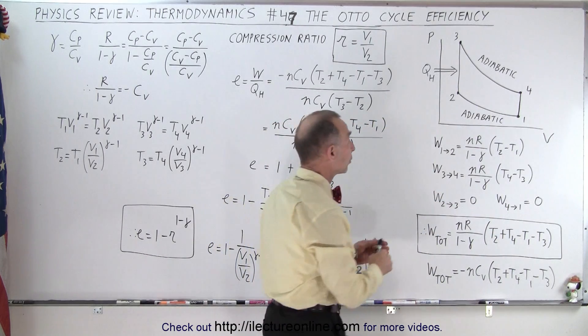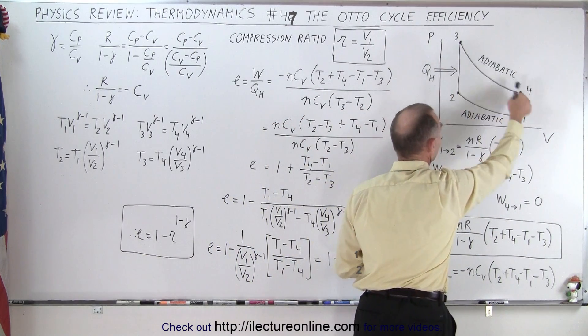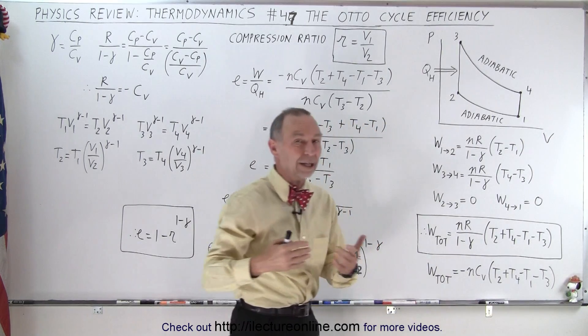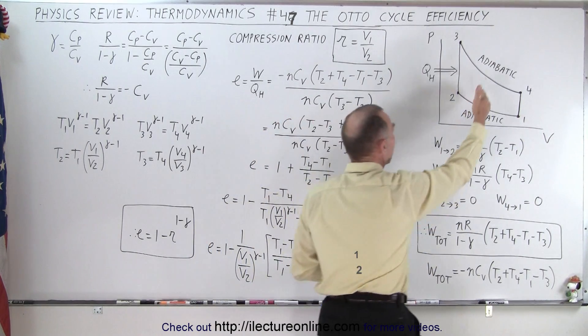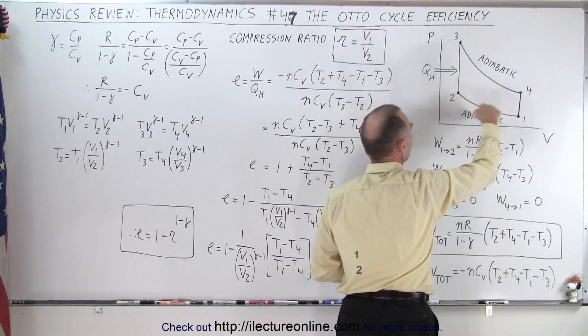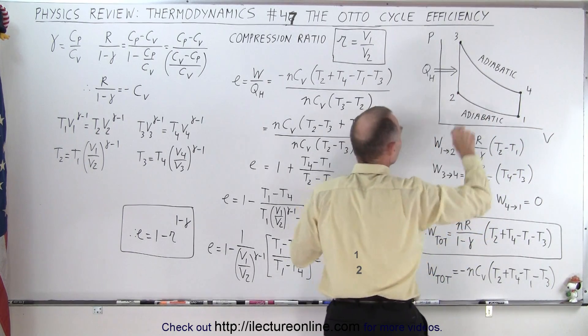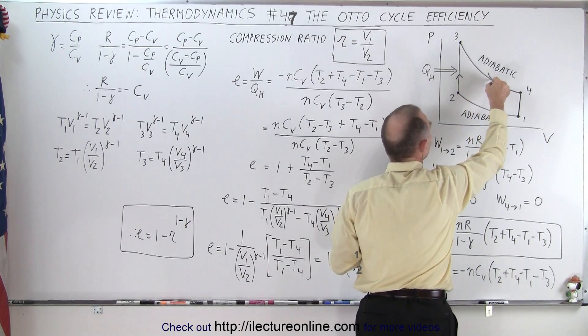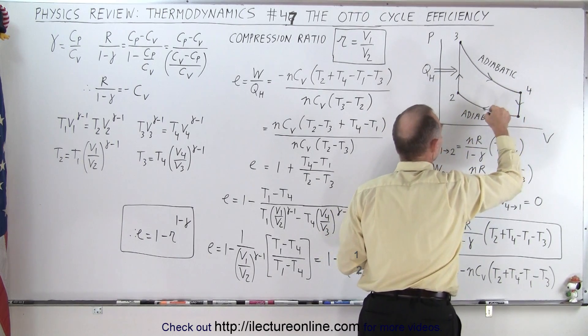Of course the work done by the two isovolumetric processes is zero, so the only work done in an Otto cycle is the two adiabatic processes—work done by the gas and then work done on the gas as we go back. I should draw little arrows to indicate that we're going in a clockwise direction in this cycle.